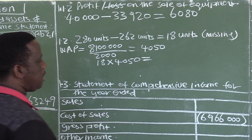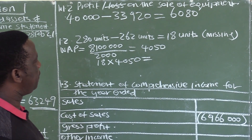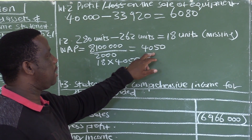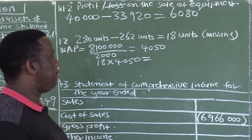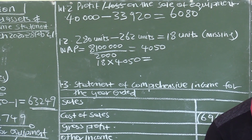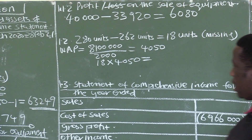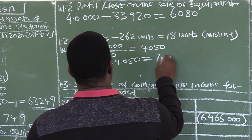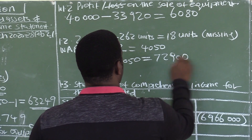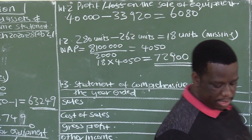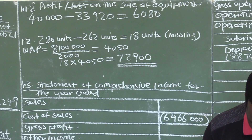18 units multiplied by 4,050, because each unit is valued at 4,050 and there are 18 units missing. 4,050 multiplied by 18 units equals 72,900. So the trading stock deficit is 72,900.